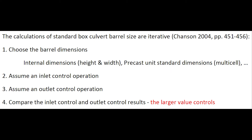The calculations of a standard box culvert size are iterative. We choose the barrel dimension — internal dimension and precast unit standard dimension for a multicell structure. We then assume inlet control operation, then assume outlet control operation, and compare the inlet control and outlet control results, with the larger head loss controlling the flow condition.